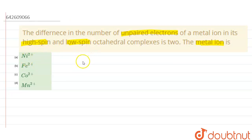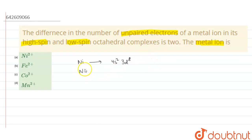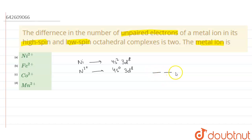The first option is nickel 2 plus. The outer electronic configuration of nickel is 4s2 3d8, and for nickel 2 plus it becomes 4s0 3d8. We have 5 d-orbitals. Let us fill these electrons for the high spin complex.